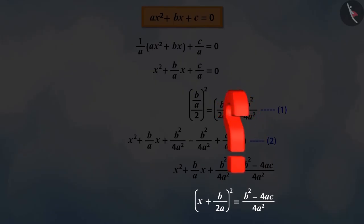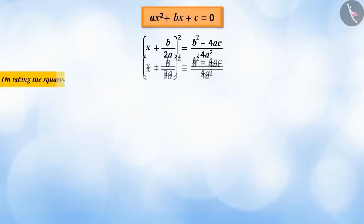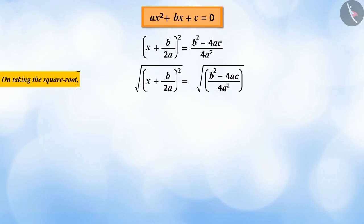What do we need to solve this equation? We find the square root of the equation, keeping in mind that on the right side of the equation, we put a positive and negative sign.